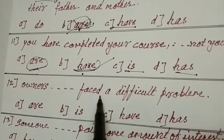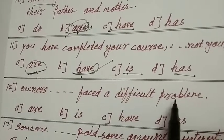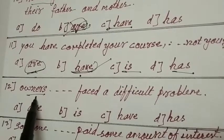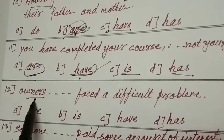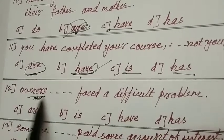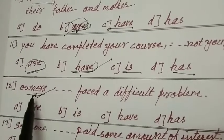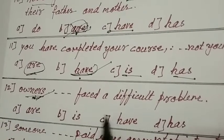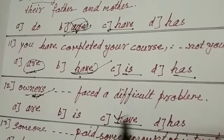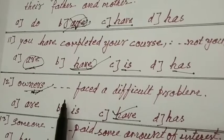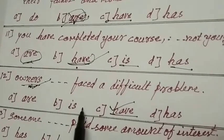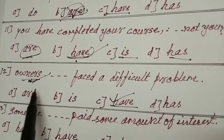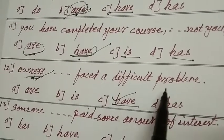Owners dash faced a difficult problem. Earlier I said has comes, but owner is plural, more than one. Owners, more than one. That is why have should come. I have told earlier in the series, first series I have told. Owners have faced a difficult problem.